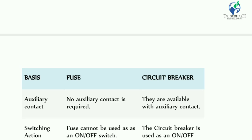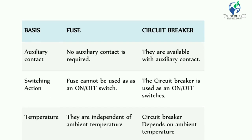The next parameter is switching action. The fuse cannot be used as an on-off switch. Switching means moving from one state to another — similar to how a diode switches between forward bias and reverse bias. In the case of a fuse, it cannot function as a switch, whereas the circuit breaker can be used as an on-off switch.